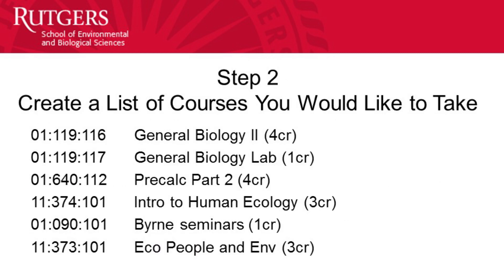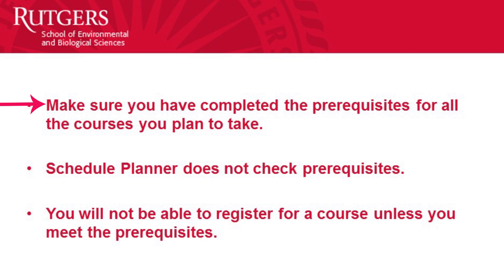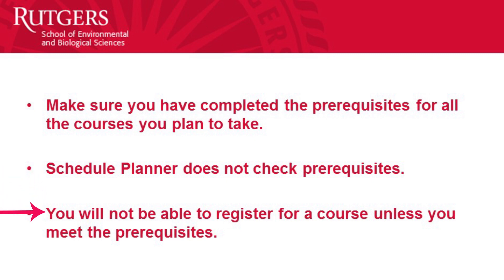Working with your academic advisor and with Degree Navigator, create a list of courses that you would like to take in the upcoming semester. It's a good idea to write down the course names and course numbers. Make sure that you have completed the prerequisites for all the courses that you would like to take. Rutgers Schedule Planner does not access your Rutgers records and cannot tell whether or not you've completed prerequisites. Rutgers Schedule Planner will let you add any course to your schedule; however, once you go to register, web registration won't let you register unless you have the prerequisite.